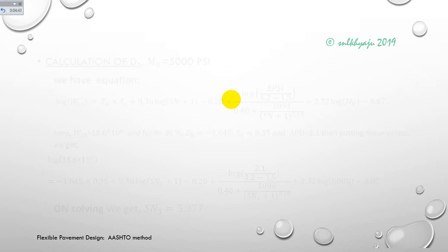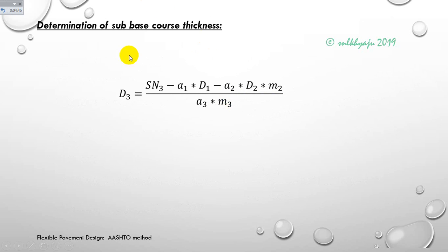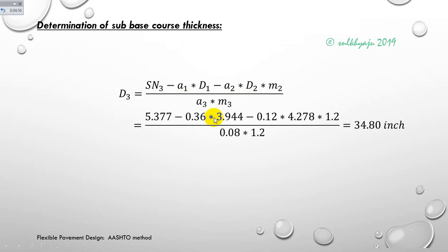Using structural number SN3, we determine the subbase course thickness from the equation: d3 equals (SN3 minus a1×d1 minus a2×d2×m2) divided by (a3×m3), calculated as 34.80 inches. This is the depth of the subbase course thickness.